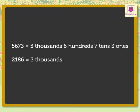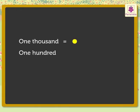And out of these, 2 thousands, 1 hundred, 8 tens and 6 ones are tied up. Let us represent each thousand with a yellow dot, each hundred with a green dot, each ten with a red dot and each one with a blue dot.